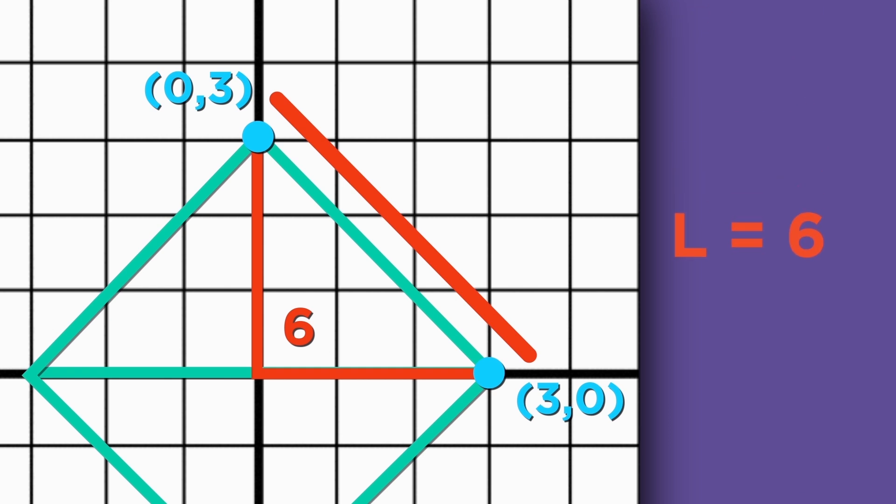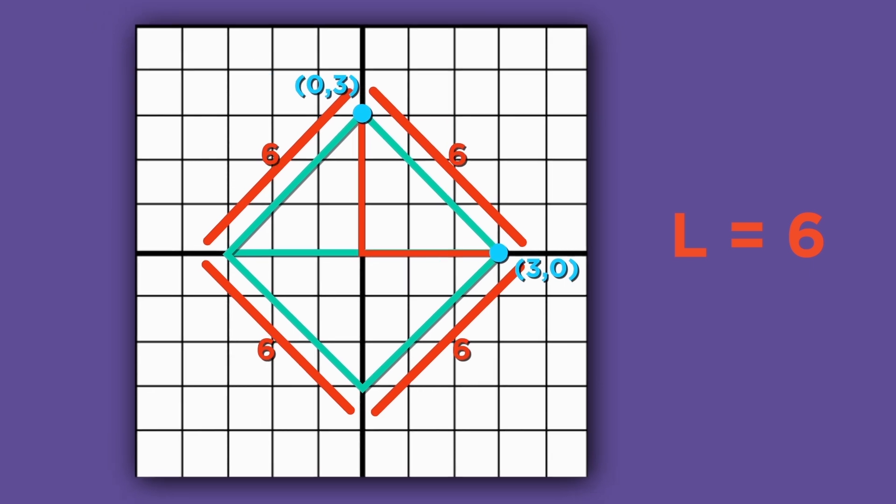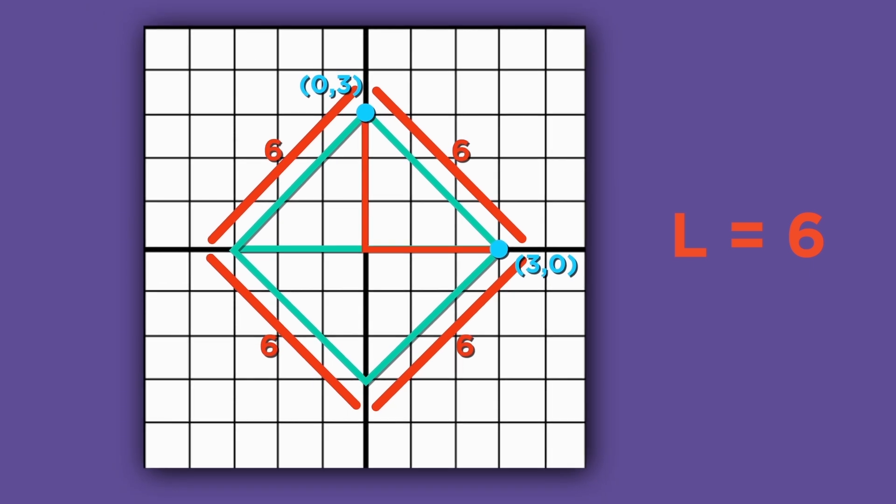In fact, by similar reasoning, all four lines have length six, which means that the circumference has a total length of 24. Now, the diameter of our taxicab circle is 6. That means that pi is 24 divided by 6, which is 4, not 3.14.